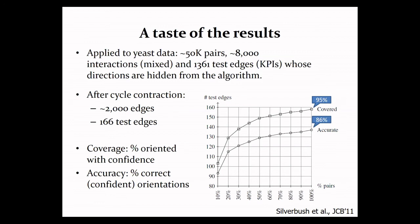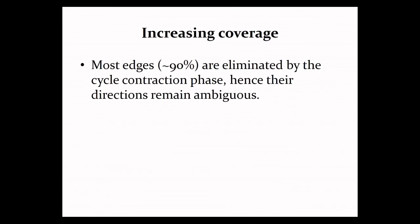Moreover, you can see that when we are at the full information, it reaches quite a high accuracy level of 86%. So this is very satisfying, except for one obvious weakness. And this weakness is the fact that already in the cycle contraction phase, before we even started our ILP, 90% of the edges were eliminated. And the question is, how can we overcome that?